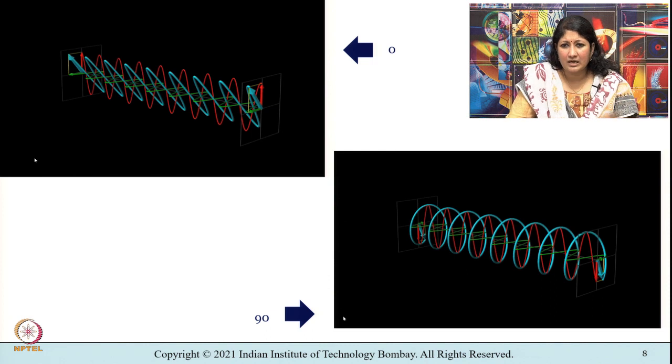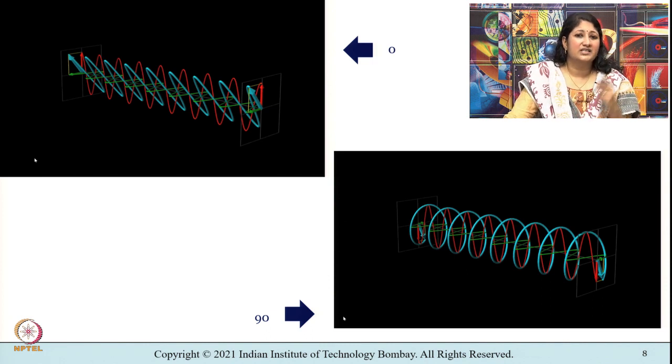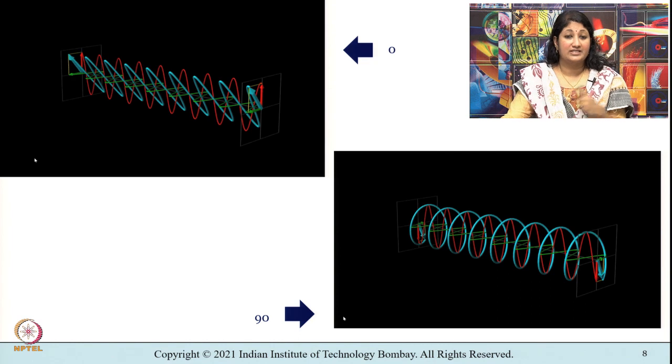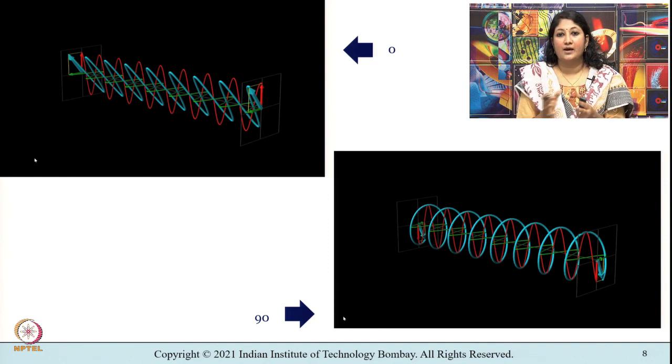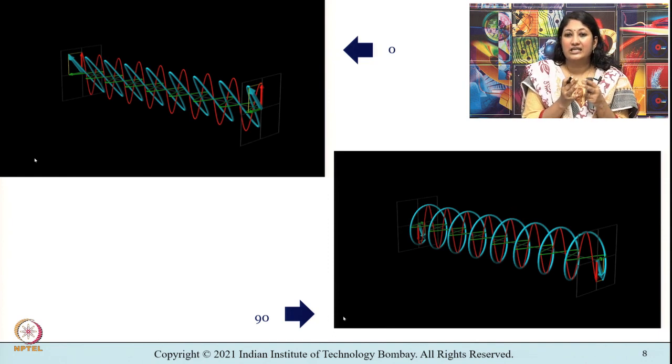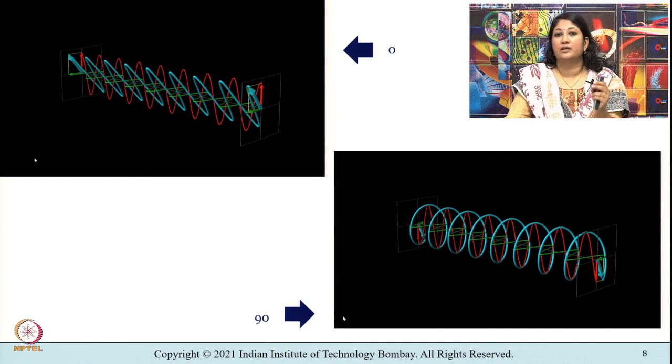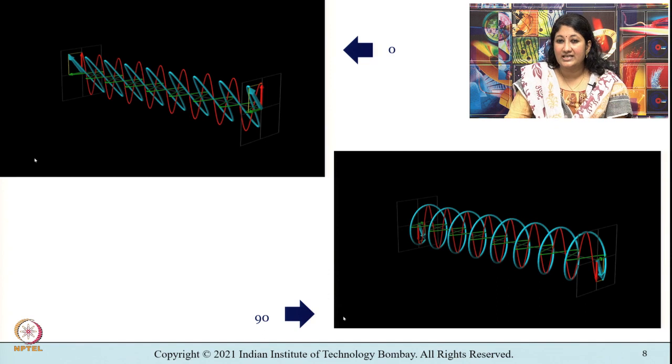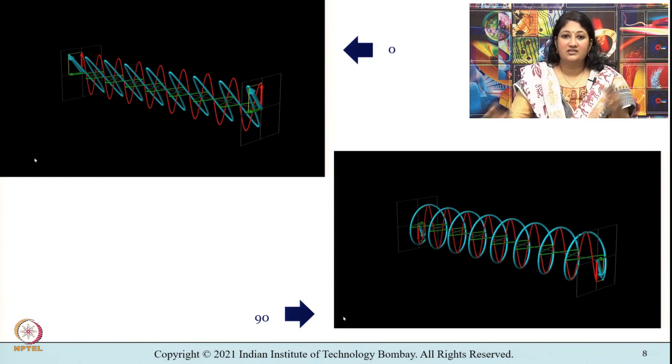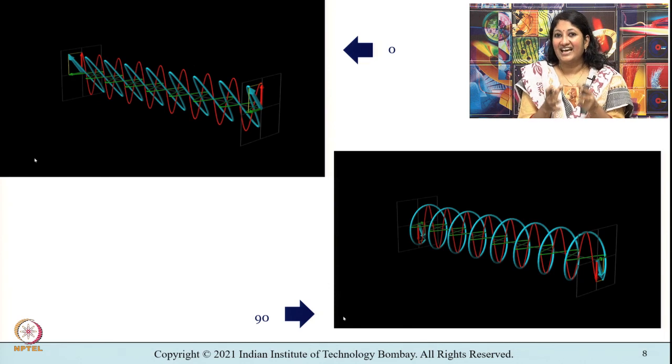See some radar systems they transmit only one single polarization. For example, we have Radarsat that is the Canadian remote sensing earth observation satellite program. The Radarsat it transmits and receives only horizontally polarized wave. When we talk about ASAR or advanced synthetic aperture radar which is on ENVISAT which is an earth observation mission of European space agency, it can receive both horizontal and vertical polarization. ASAR on ENVISAT radar can receive both horizontal as well as vertical polarization.